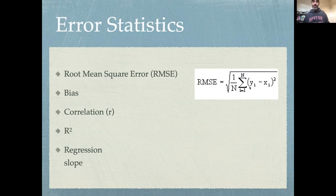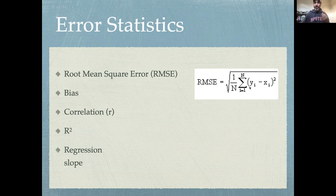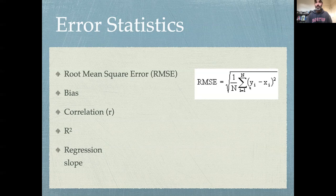We square the error for all the same reasons we talked about in regression: it gives us a penalty that leads to a unique solution, it doesn't just tell us about canceling errors, and it penalizes larger errors more than small errors. A model with a lot of tiny errors isn't necessarily one we worry about, but one with large outliers represents things we really got wrong.